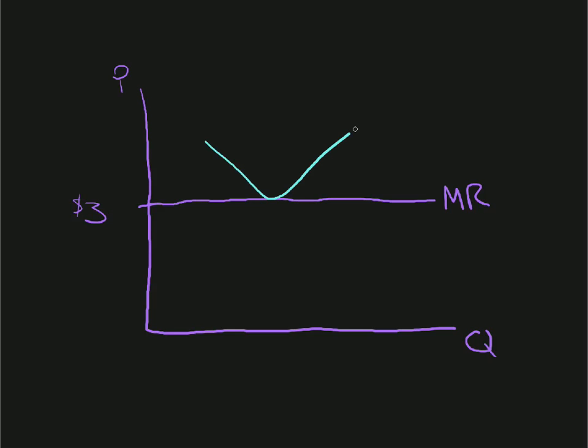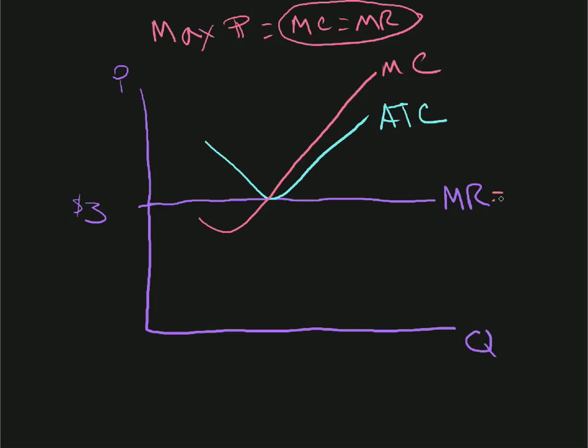It's going to just nick that marginal revenue line there. Average total cost. Now we're going to look at the marginal cost line. And it goes like this and hits the average total cost line at a minimum. Marginal cost. We're going to figure out how to maximize profits. Marginal cost equals marginal revenue. Marginal revenue equals price. This is the moment here. Marginal revenue equals marginal cost here.